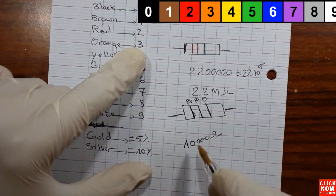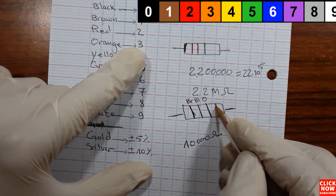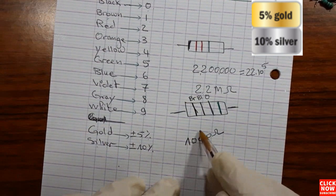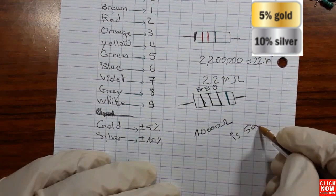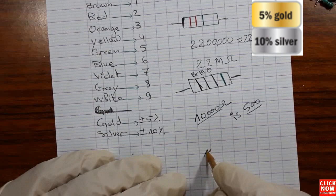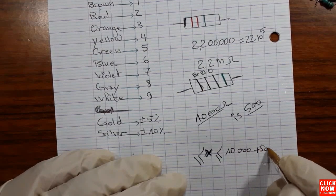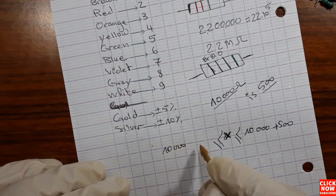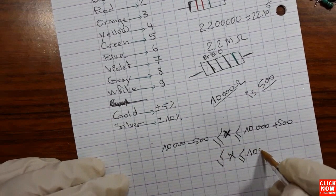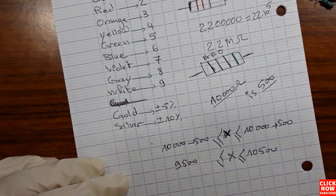So here we have 10,000 ohms. If the fourth color is gold, we apply a plus or minus 5% tolerance. 5% of 10,000 ohms is 500, so the value is between 10,000 plus 500 and 10,000 minus 500 — that is, less than 10,500 and greater than 9,500.